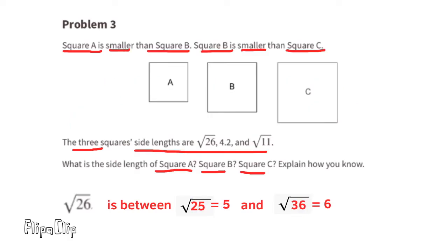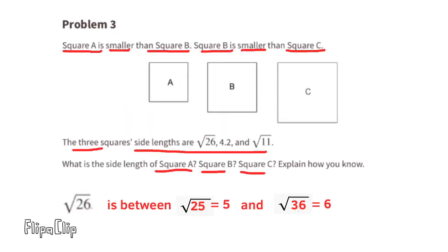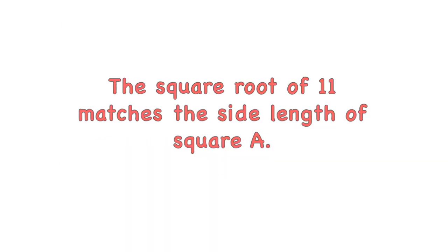For side length 4.2: 4.2 times 4.2 is a little more than 17.5 square units, which is greater than 11 but less than 26. So 4.2 is the side length for Square B. The smallest side length is the square root of 11, which matches Square A.